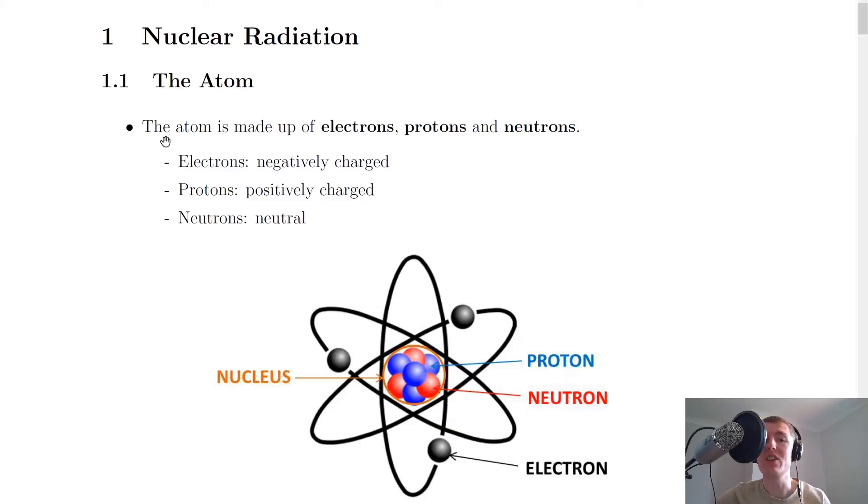So it says here that the atom is made up of electrons, protons and neutrons, and you've probably seen this before. The electrons are negatively charged, the protons are positively charged and the neutrons are neutral.